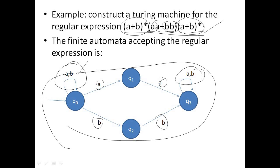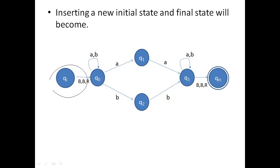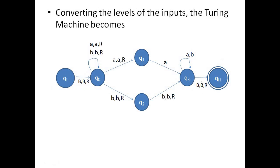Next, we need to introduce a new initial state and new final state with transition B, B, R. So I introduced a new initial state and new final state with transitions B, B, R. The next step is to convert the given inputs into the format input, input, R. For q-naught, we had a and b, so we convert to A, A, R and B, B, R. Here also A, A, R and B, B, R will be there.